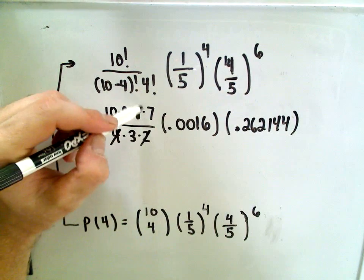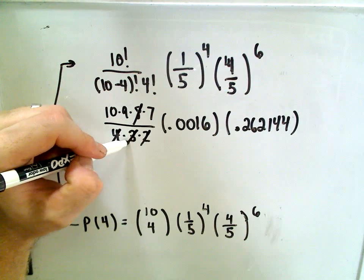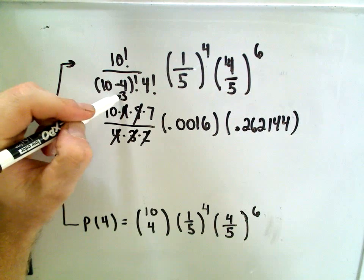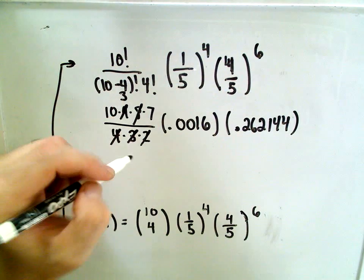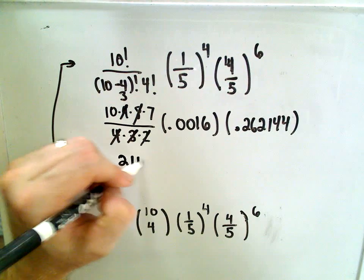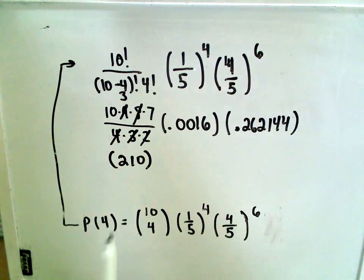Okay, so four times two, that'll cancel out with the eight. Three will go into nine three times, ten times three is thirty, times seven is 210. So, the ten choose four simplifies down to just 210.